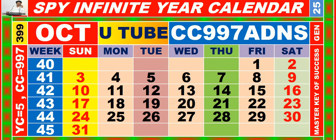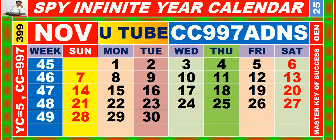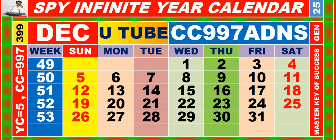Calendar for the month of December having calendar code equal to 997.